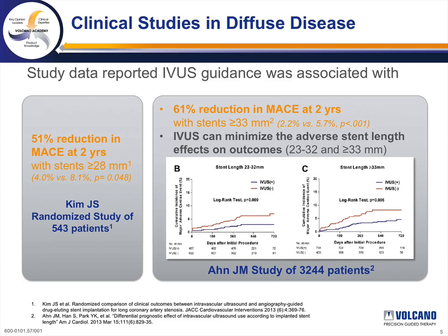The second study is a registry published in 2013 in the American Journal of Cardiology, comprising 3,244 patients comparing MACE rates based on angiogram versus IVUS-guided interventions. They looked at lesions treated with stent lengths of less than 23 mm, 23 to 32 mm, or greater than 33 mm. IVUS guidance was associated with a 61% reduction in MACE rates for lesions covered by greater than 33 mm of stent, from 5.7% to 2.2%, which was statistically significant. A significant difference was also found in the 23 to 32 mm group.